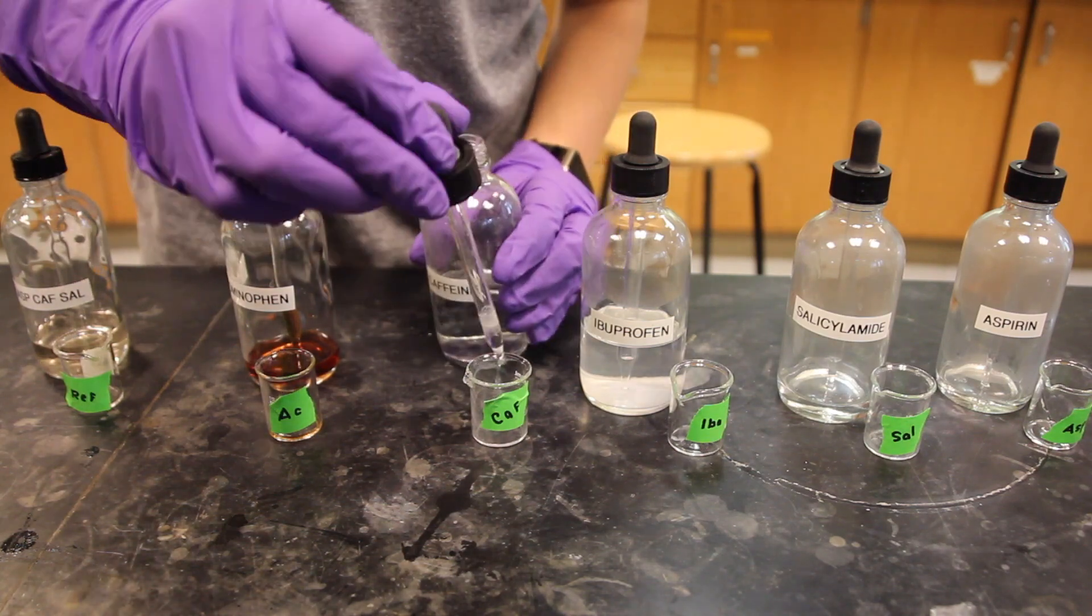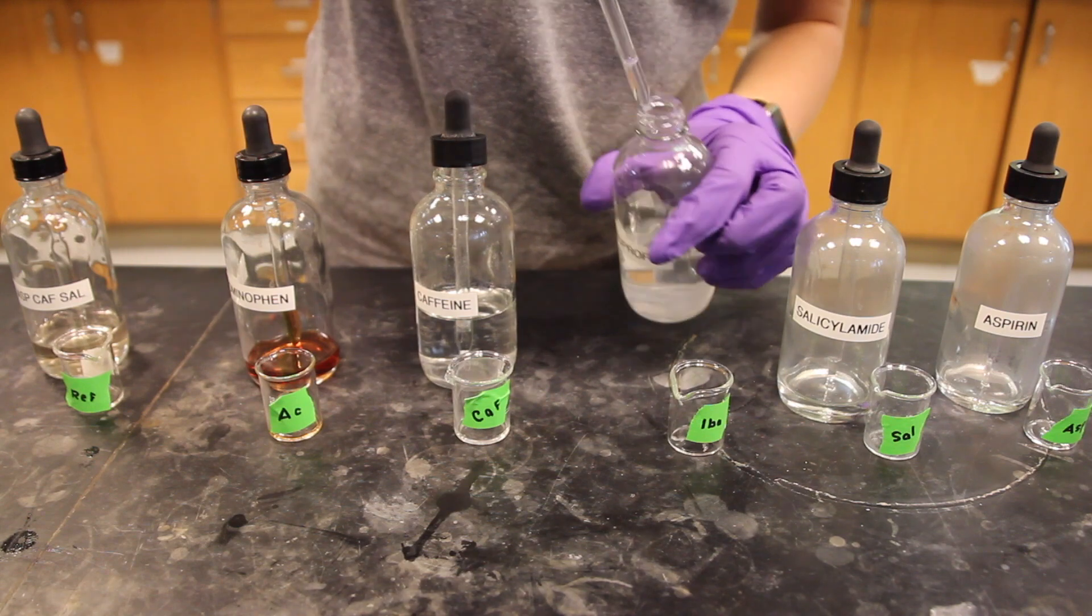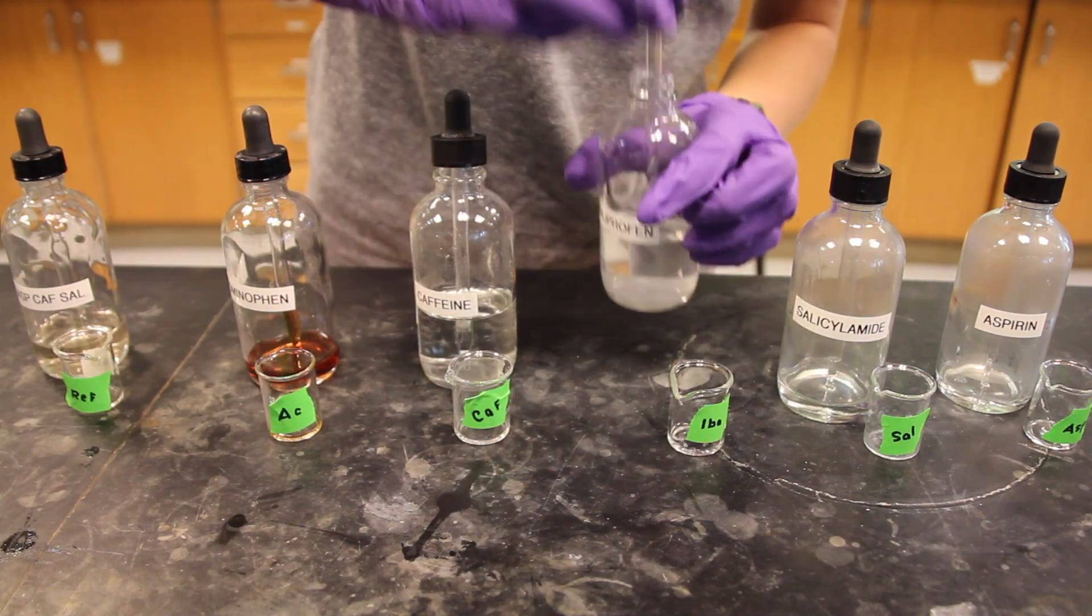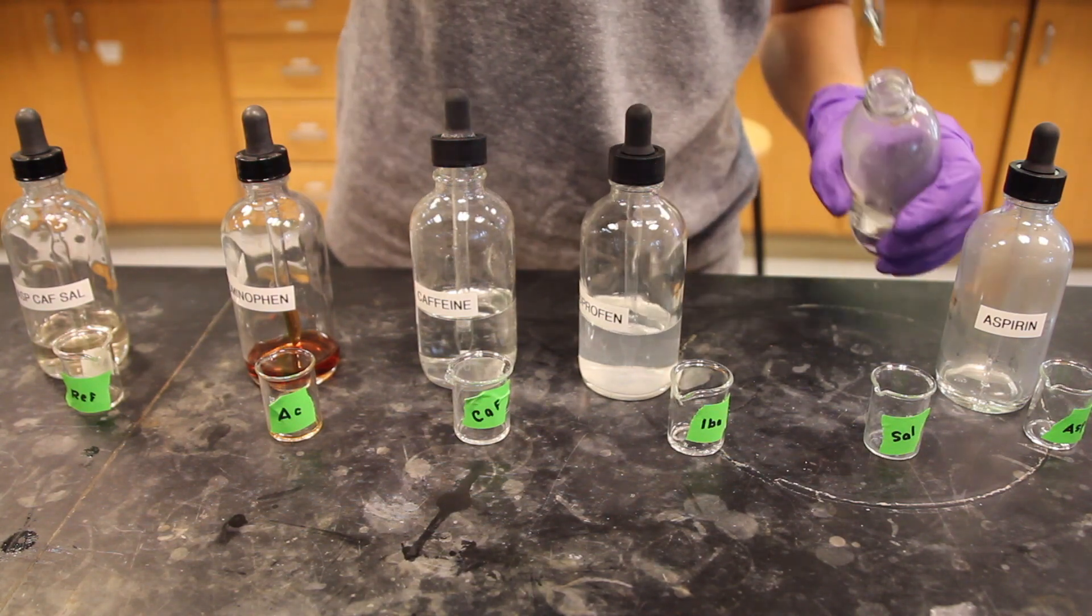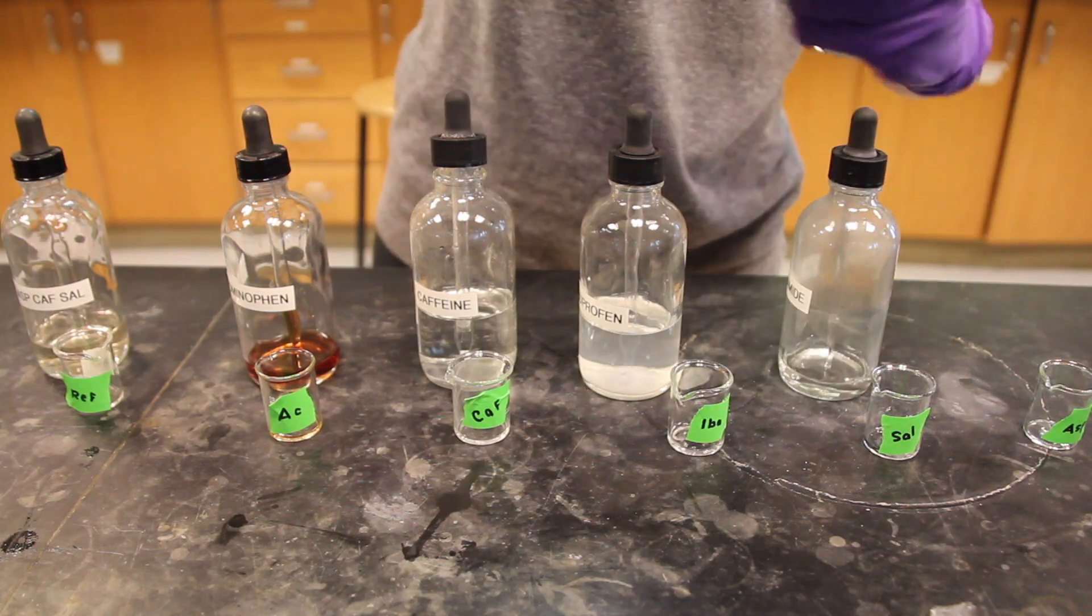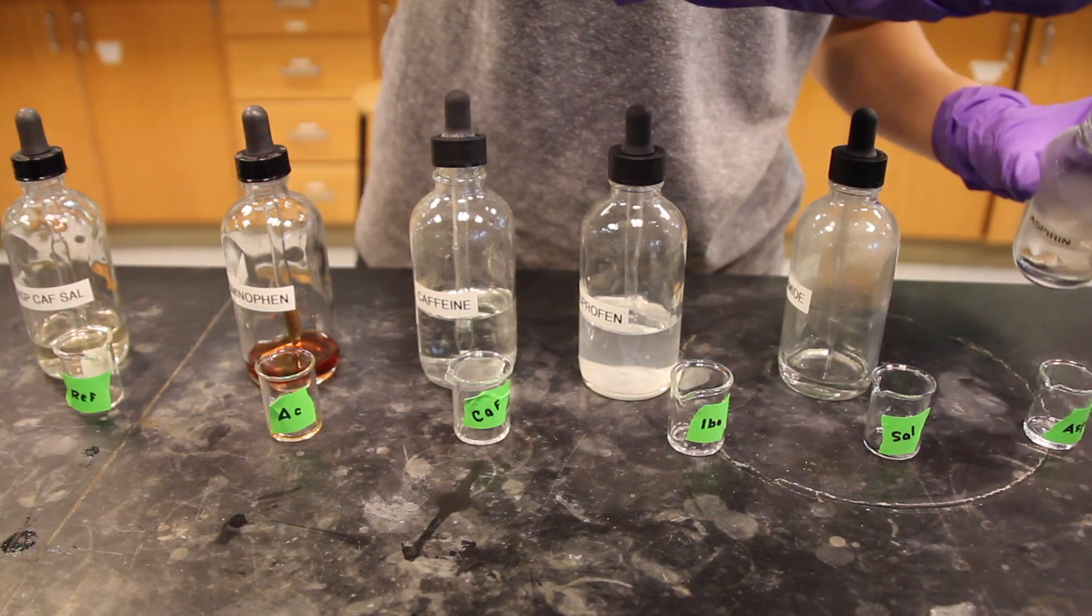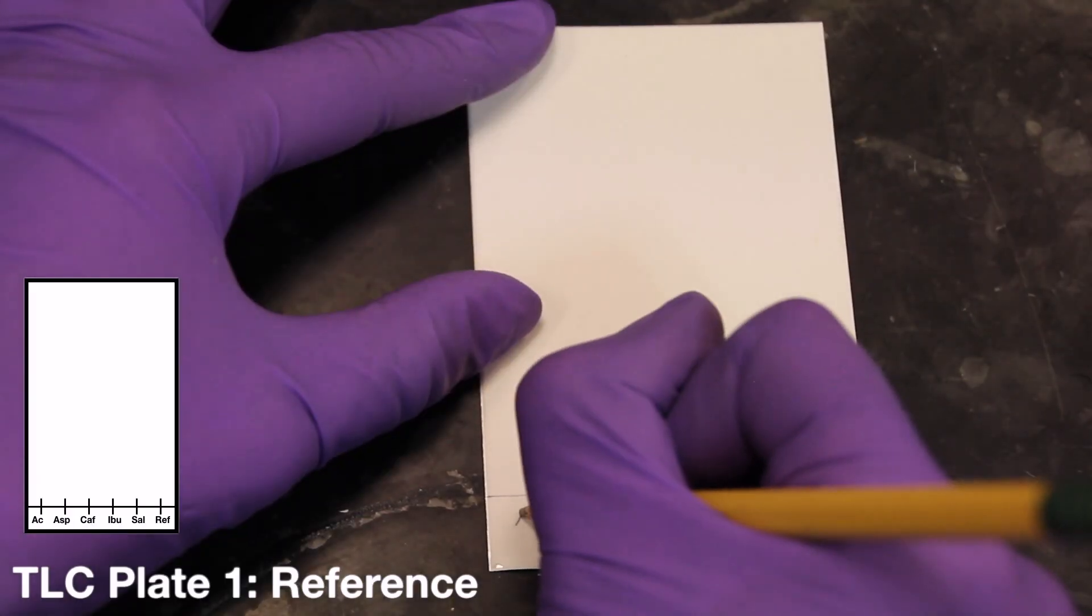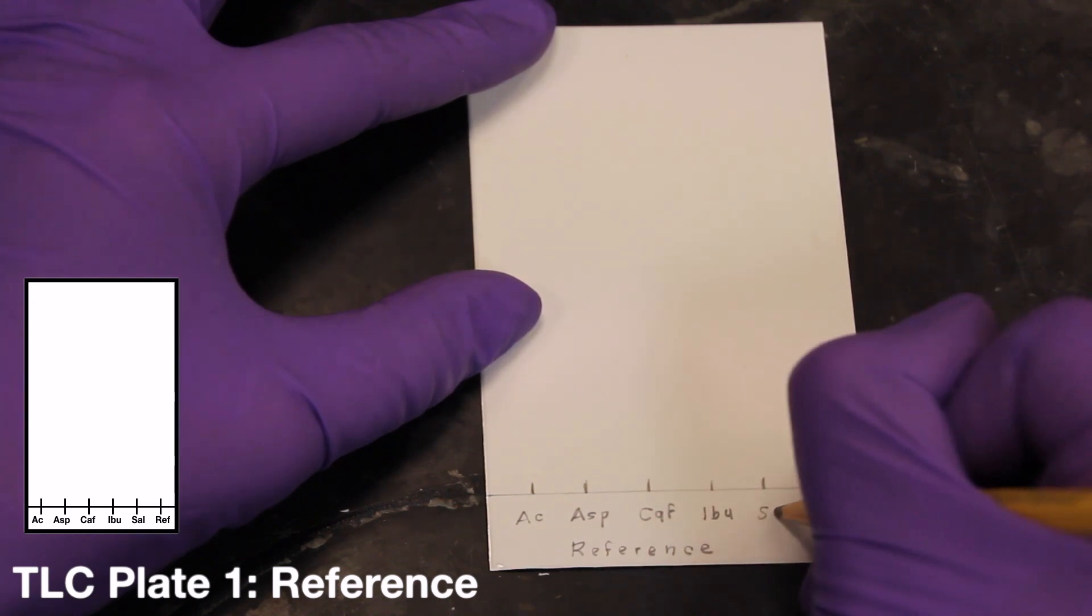Ibuprofen is not included in this mixture because its RF value is very close to that of salicylamide under the chromatography conditions that we use here. Obtain a few drops of the known reference solutions in labeled 10 mL Erlenmeyer's or beakers. Share these solutions with other students in the lab, as each person only needs a very small amount. It is helpful to apply the compounds in alphabetical order to minimize the chance of confusion: acetaminophen, aspirin, caffeine, ibuprofen, salicylamide, and finally the mixture.